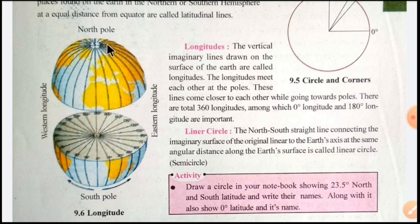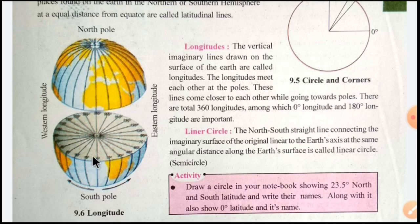The longitudes meet each other at the poles — here at the North Pole and here at the South Pole. These lines come closer to each other while going towards the poles, from North Pole to South Pole. There are a total of 360 longitudes, among which 0° longitude and 180° longitude are the most important.